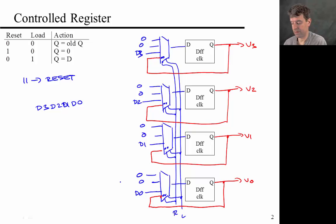Okay, so now using multiplexers, I've been able to realize the so-called controlled register, where I get to choose whether I'm holding a value, I'm reading in a new value, or possibly I'm resetting the register.